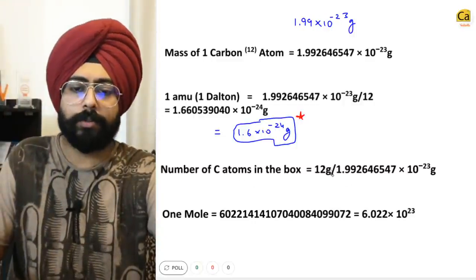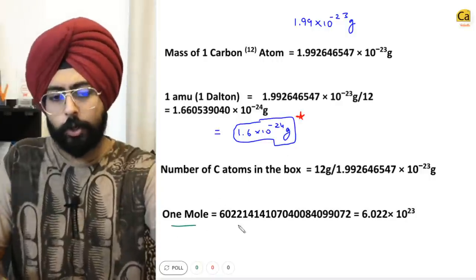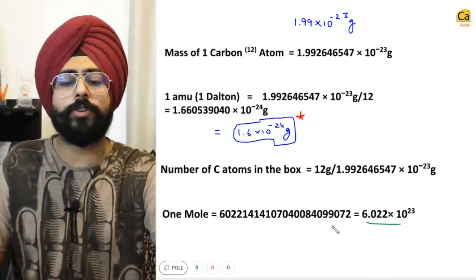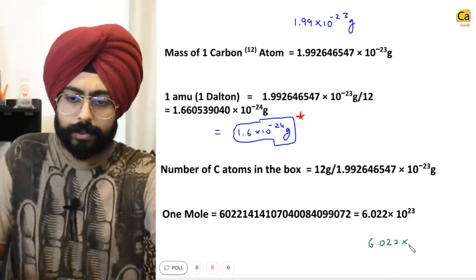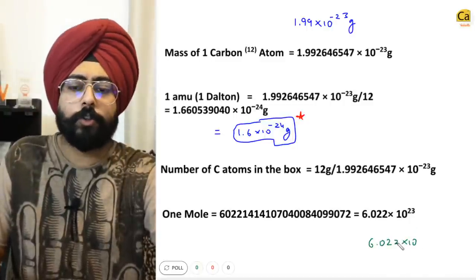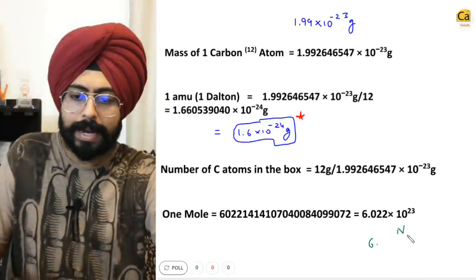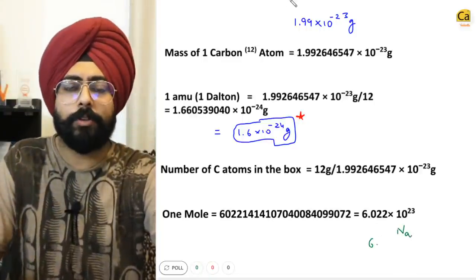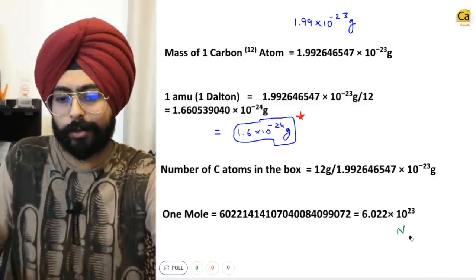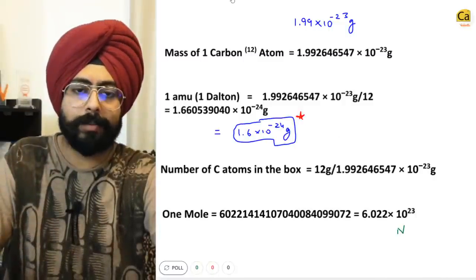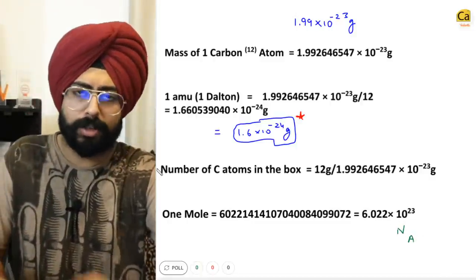If you think of a box of carbon atoms of 12 grams, you are essentially deriving the mole. So 1 mole equals 6.022 × 10²³. This is Avogadro's number, represented as Nₐ — N with a tiny subscript A at the bottom, not sodium. Avogadro's number. That was simple. Then comes stoichiometry.